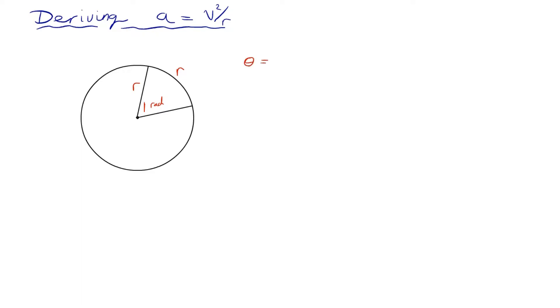So remember, when the angle is one radian, then the arc length, let's call the arc length s, was equal to the radius. So it was that special angle.